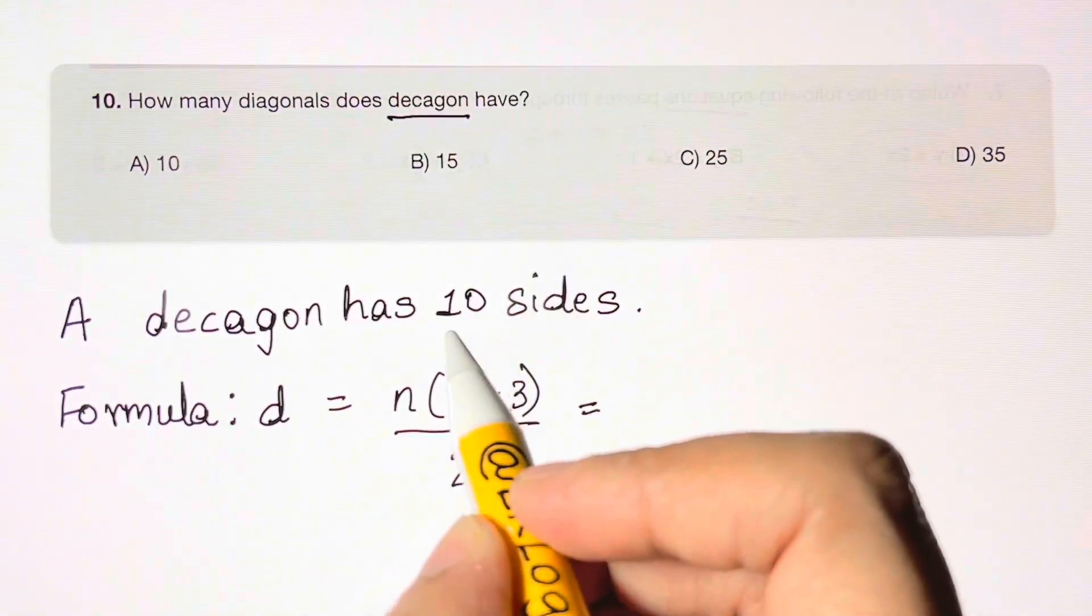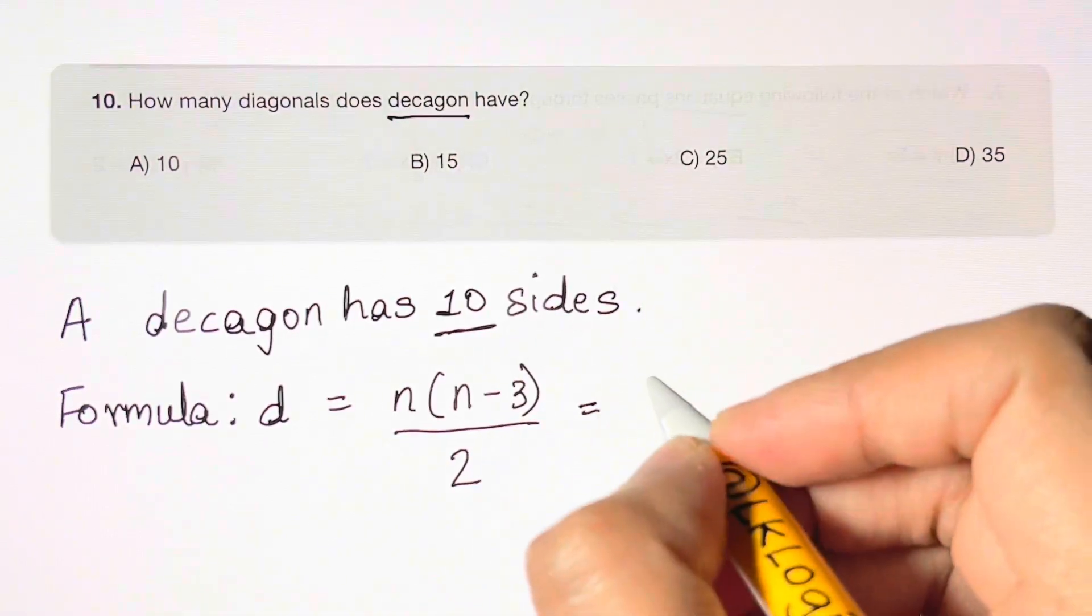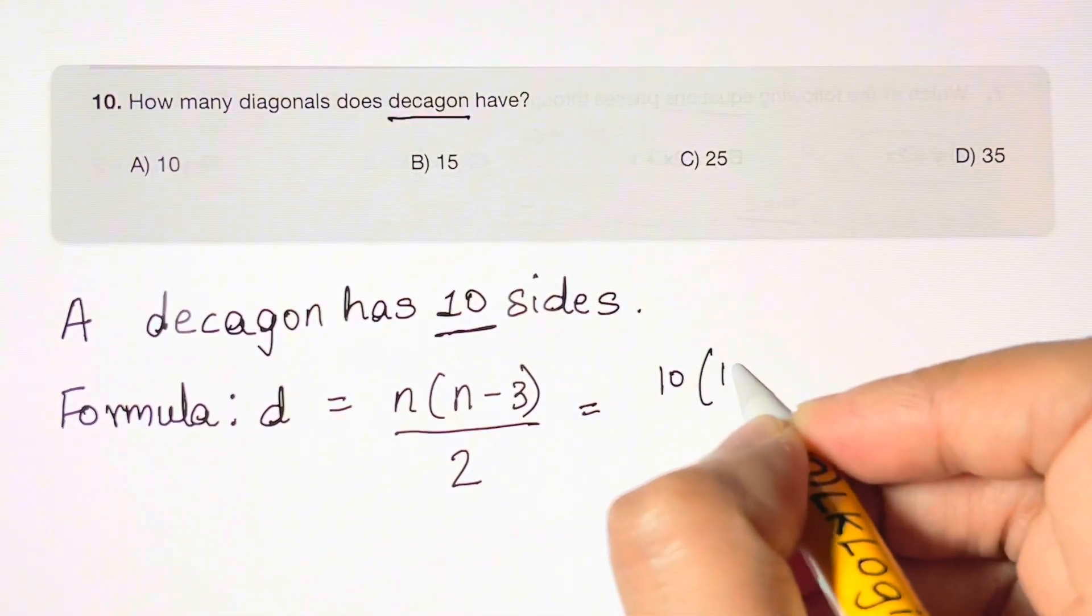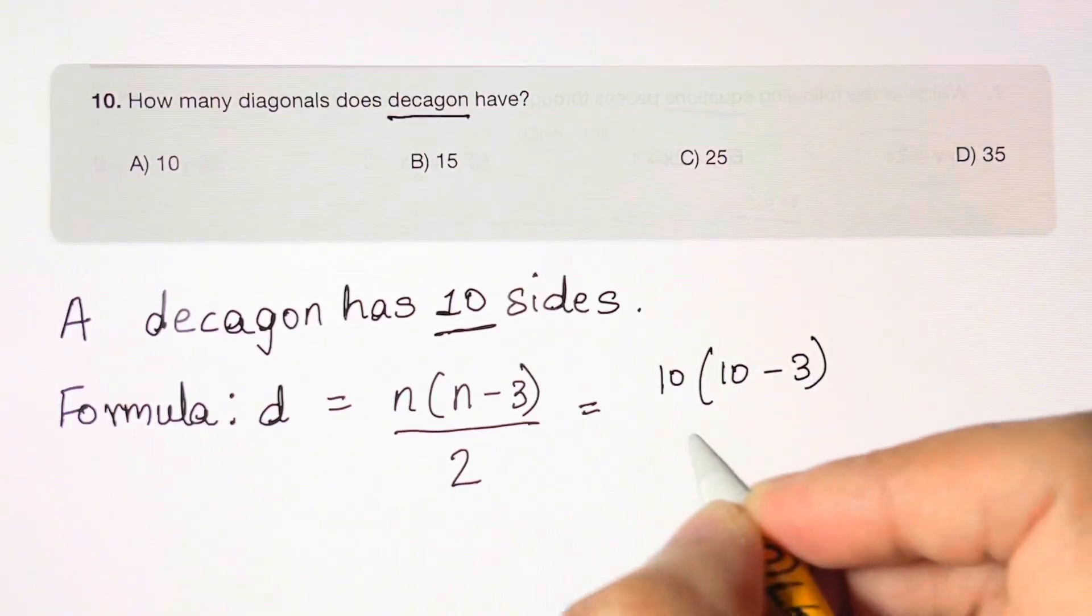Here n is the number of sides, which is 10 in a decagon. So we plug in the value 10 times 10 minus 3 over 2.